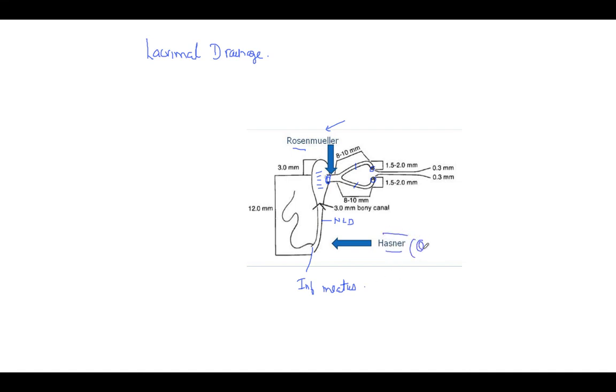An important thing is that the valve of Hassner is usually closed at birth and slowly opens, so it can be a cause of congenital lacrimal duct obstruction. The valve of Rosenmuller is situated at the level of the lacrimal sac.